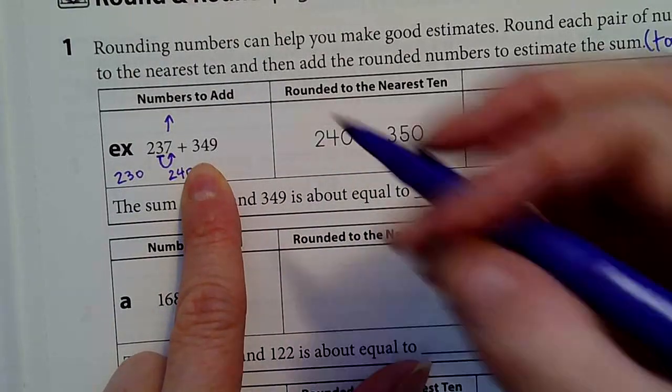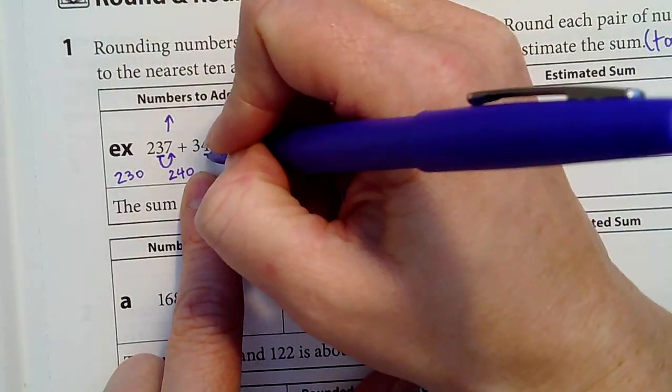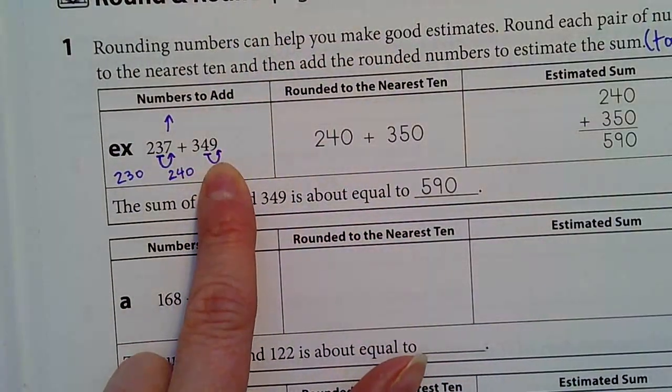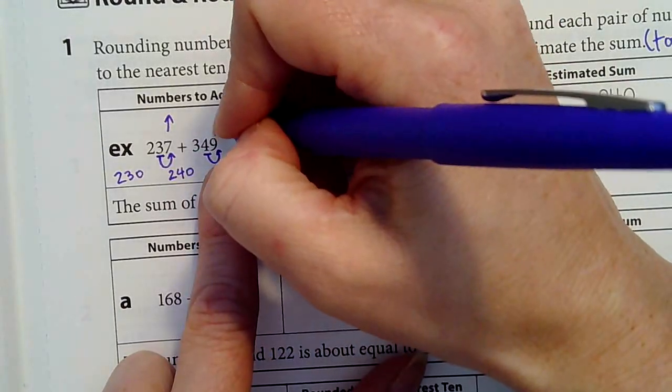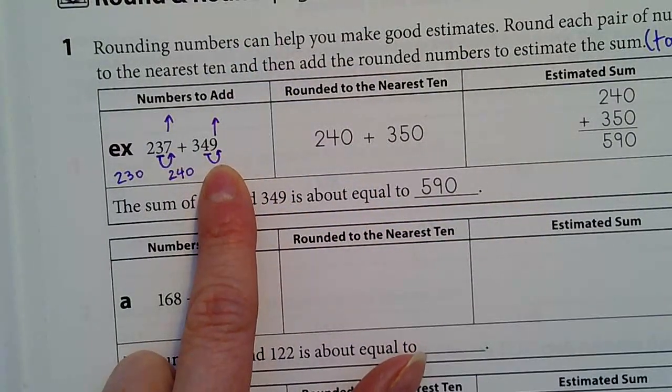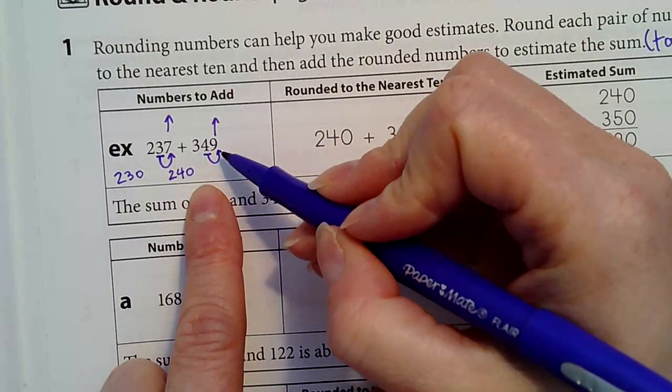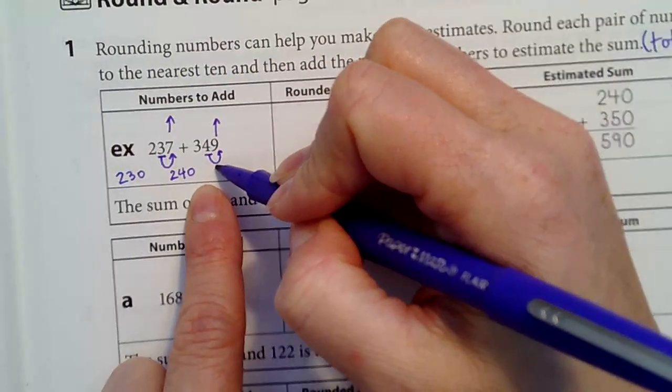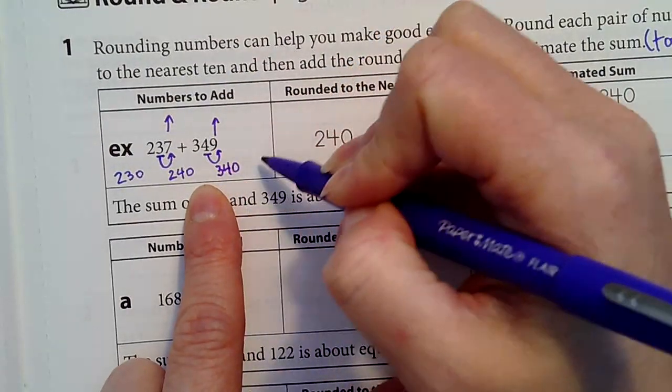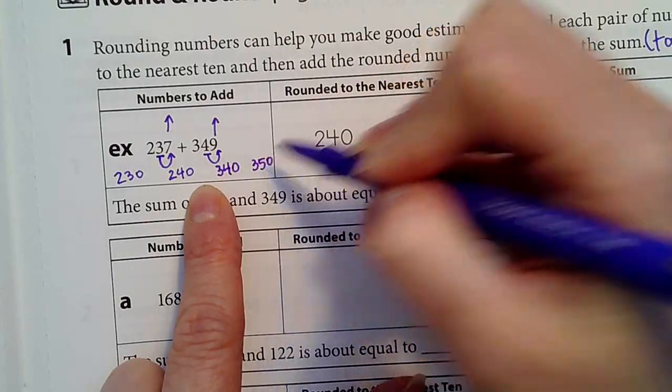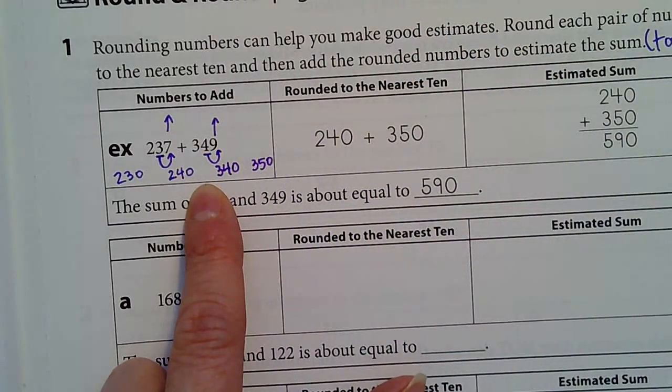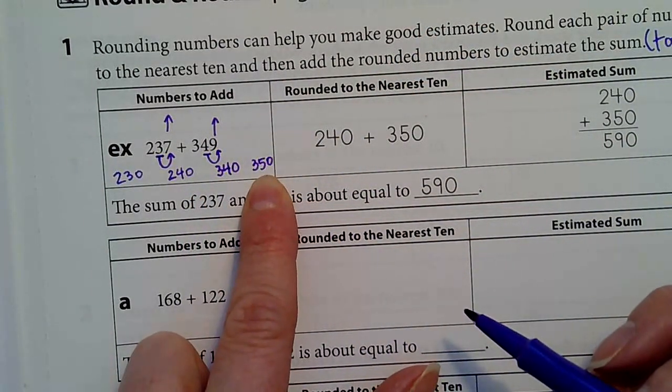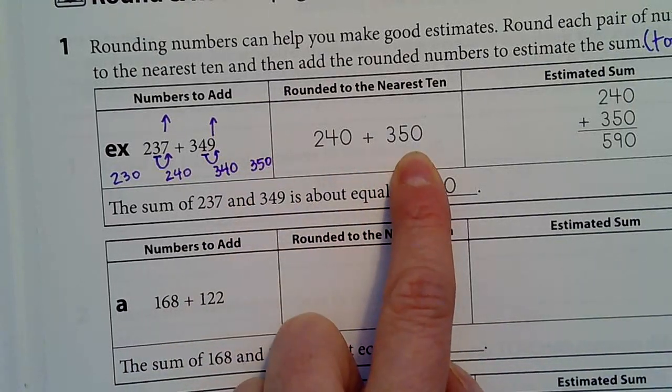The next number is 349. Here's the tens, so I look at the ones place. It's a nine, which means I round up because it's more than five. The number 349 is between 340 and 350, so if I'm rounding up, I'm going to round up to 350, which is what they put right here.